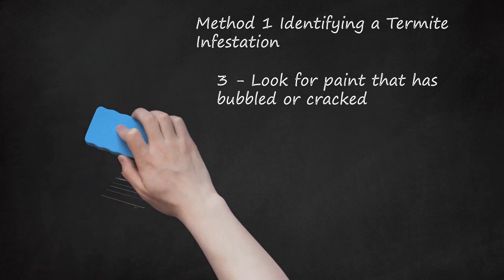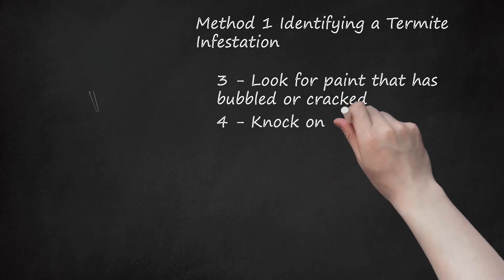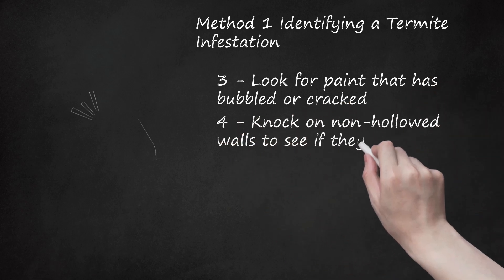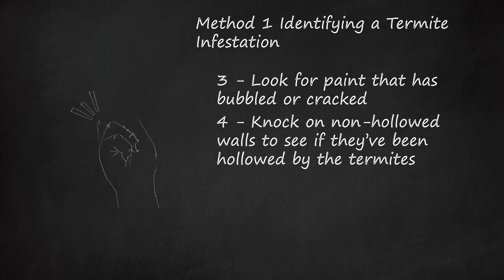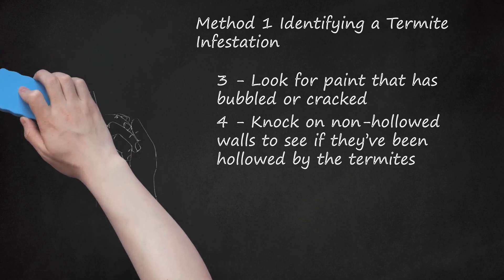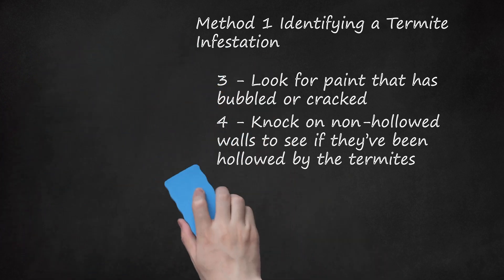Step 4: Knock on non-hollowed walls to see if they've been hollowed by the termites. Termites are capable of breaking down cellulose in wood, which creates a digestible food source for them. Sometimes this can include entire walls. Solid walls should make a thud noise and sound like there is something behind it. If your walls make a hollow or echoey sound when you knock on them, there's a good chance your walls are hollow and you have termites.